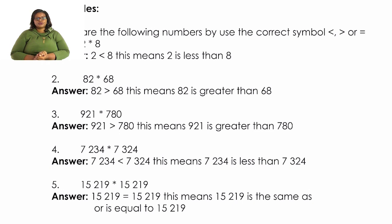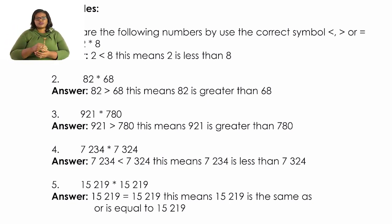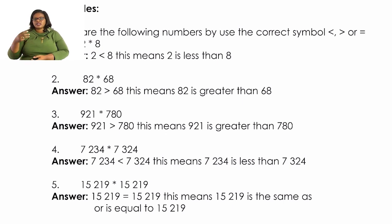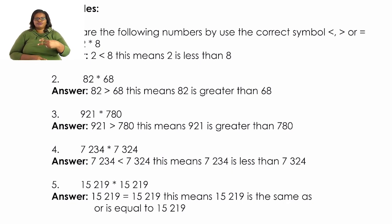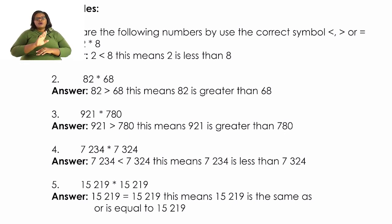On number three we have 921 and 780. We see that 921 is bigger than 780. On number four we have 7234 and 7334. When comparing, they both have 7000, but the difference is 200 vs 300, so the second one is bigger — we use the less than sign, pointing at the smaller number. On number five we have 15,219 and 15,219, which means the two numbers are equal.